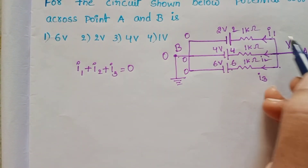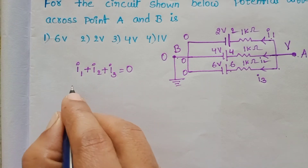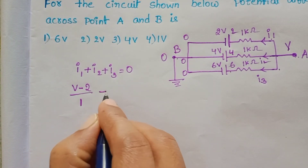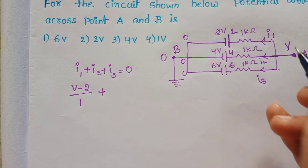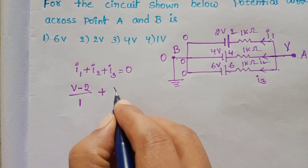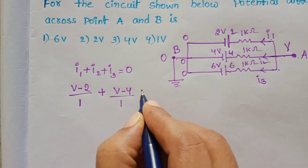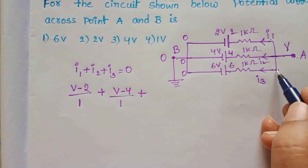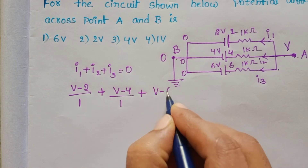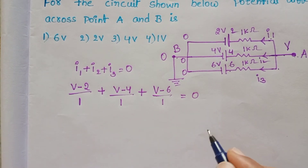In place of I1: (V minus 2) divided by resistance 1kΩ, plus in place of I2: (V minus 4) divided by resistance 1kΩ, plus in place of I3: (V minus 6) divided by 1kΩ equals 0.